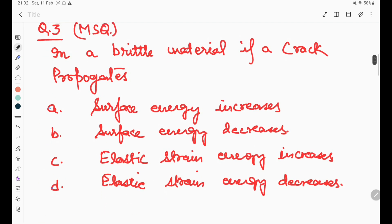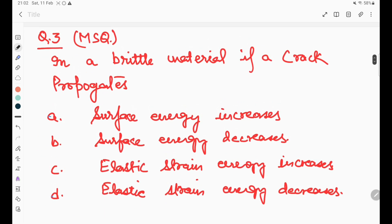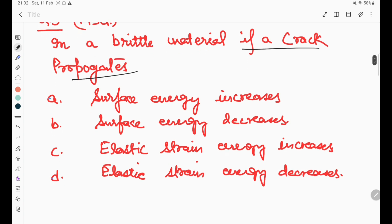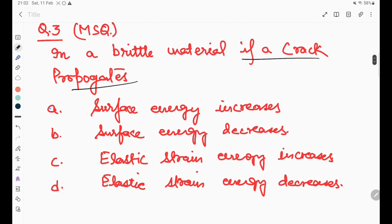The third question is a multiple-choice question. In a brittle material, if a crack propagates, then surface energy increases, surface energy decreases, elastic strain energy increases, and the last option is elastic strain energy decreases. This has multiple choice questions which have more than one answer. Option A is correct: surface energy increases, and option D is correct: elastic strain energy decreases.